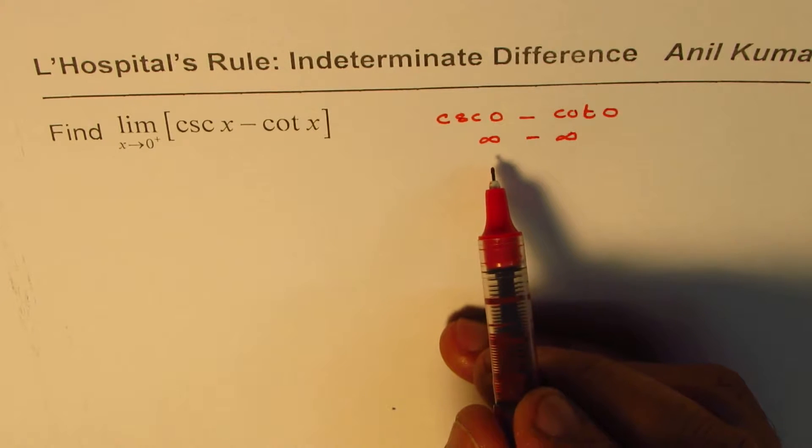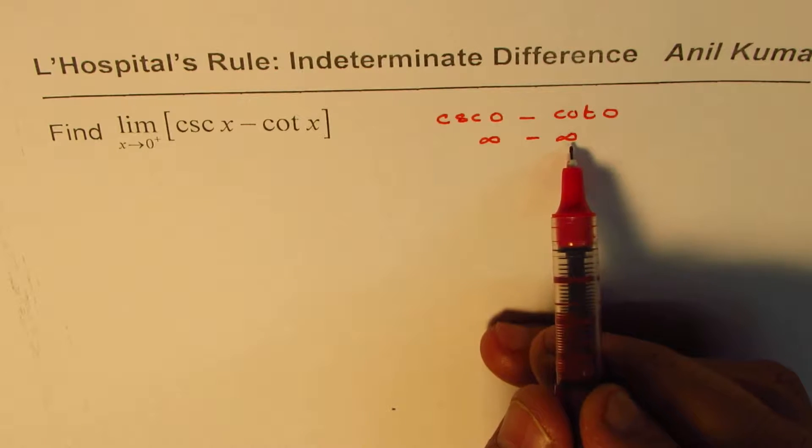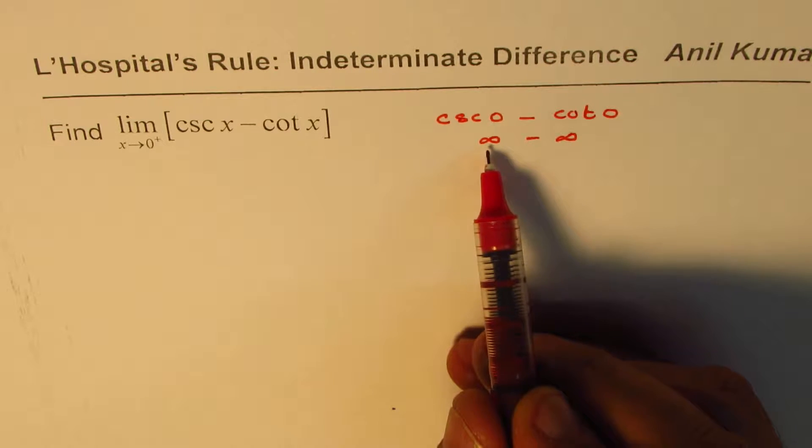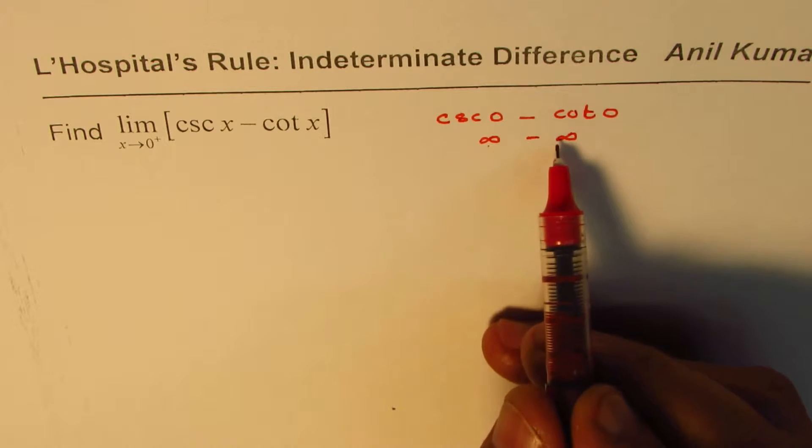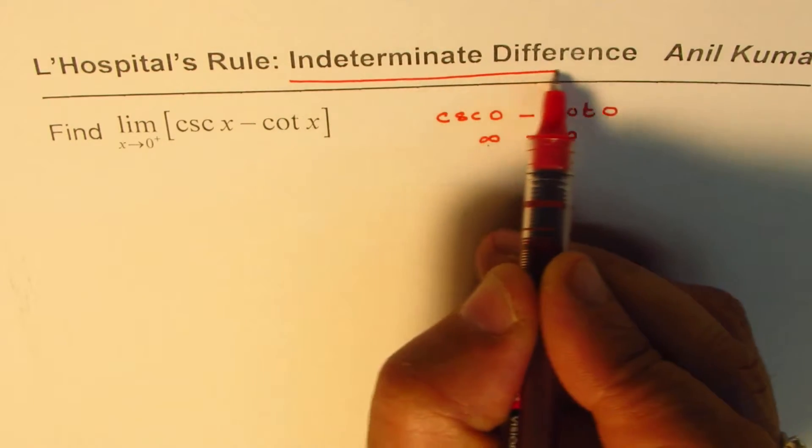So we have an example where we have difference of infinities. Now in such cases we are not sure whether the answer will be positive infinity, negative infinity, or somewhere in between. So that gives us indeterminate difference.